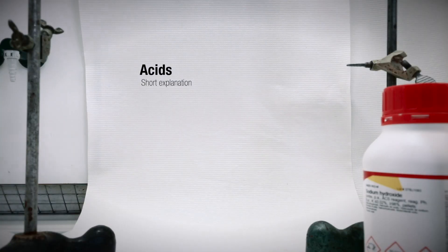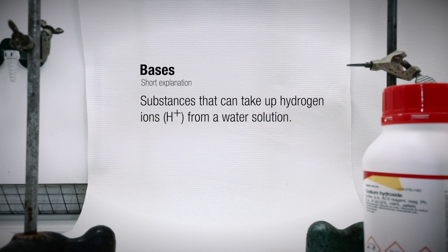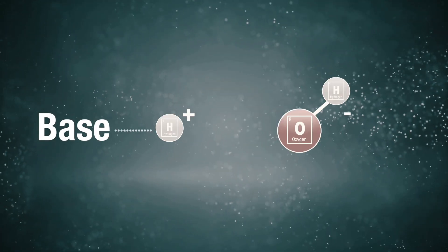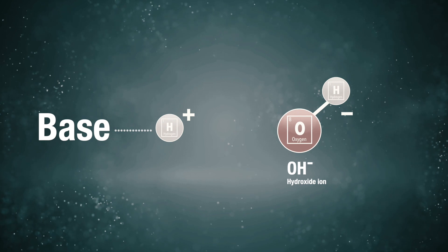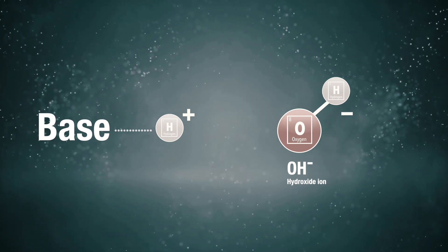The short definition is that acids are substances that can give off hydrogen ions in a solution with water. And the higher the concentration of hydrogen ions, the more acidic the solution is. A base can instead take up hydrogen ions. In a solution with water, the hydrogen can be taken from the water molecules, leaving negative hydroxide ions in the solution. The higher the concentration of hydroxide ions, the stronger the base.